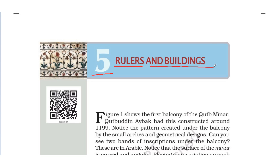Okay students, as you all know, in the last video we did chapter number 4. In this video we are going to learn about chapter number 5. The name of the chapter is 'Rulers and Buildings' — rulers meaning the kings who used to rule, and buildings meaning the constructions that were made during that era.